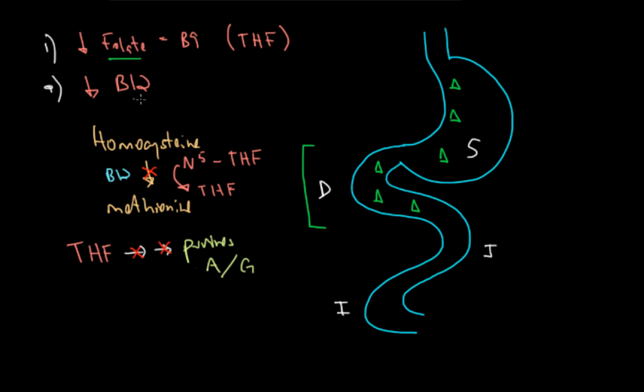So vitamin B12, which I'll underline here in light green and represent as these light green squares, also comes in with a diet. But it's not absorbed until way down here in the terminal ileum. And it has a special way of being absorbed.